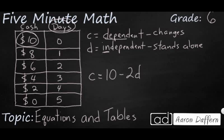Let's start with day zero. Let's see how that works. So the cash is supposed to be ten dollars. Let's see if that works. Ten take away two times zero. Well, two times zero is zero. So ten take away ten equals ten. So yes, that works.